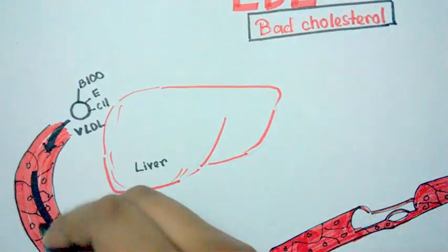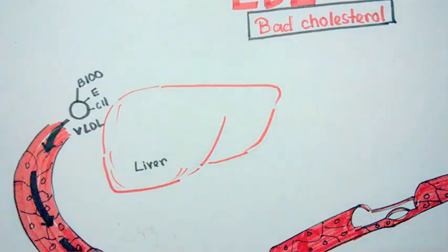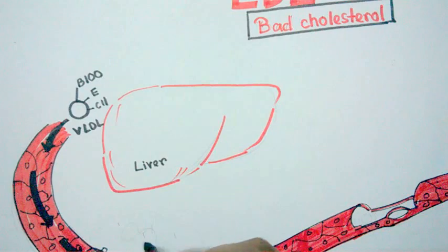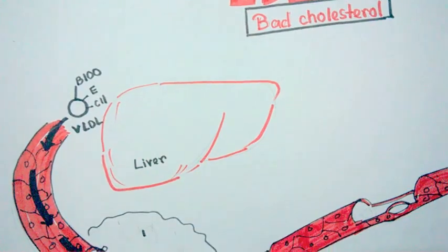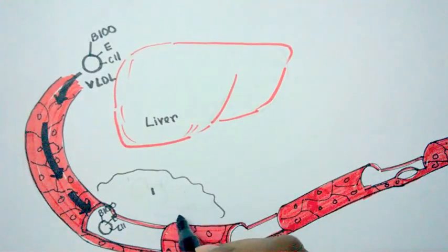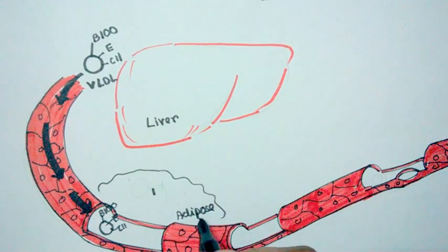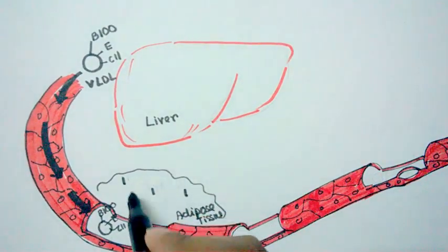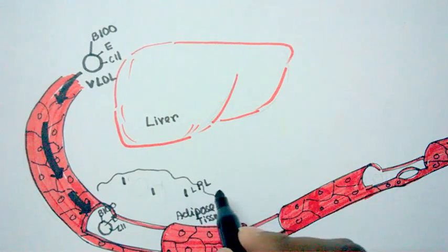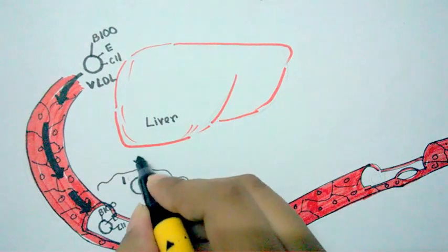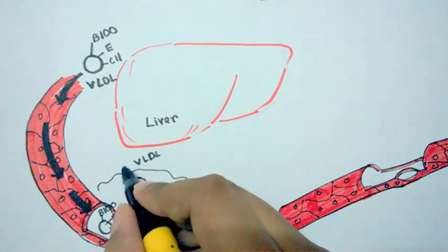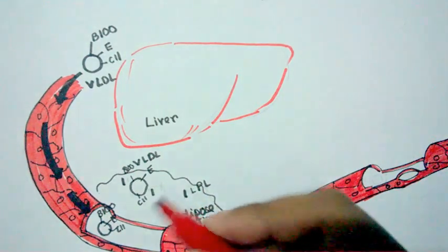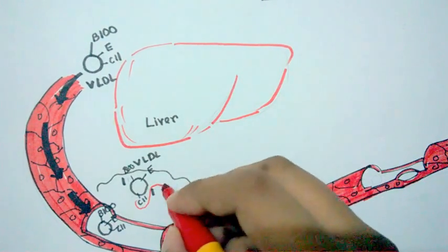This VLDL is now circulating in the blood all around the body. When it reaches the adipose tissue, it encounters lipoprotein lipase (LPL). The VLDL particle containing ApoB100, ApoE, and ApoC2 encounters this LPL, and ApoC2 actually helps it to dock to this LPL.